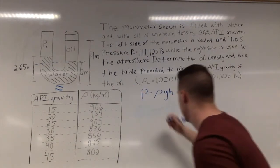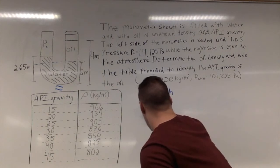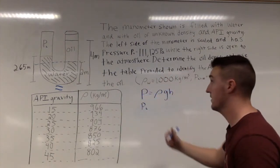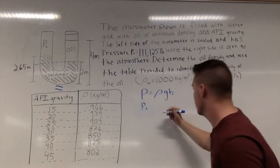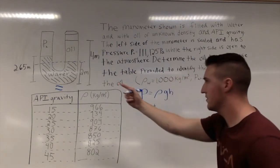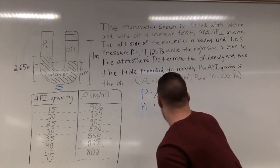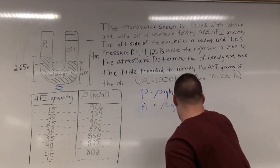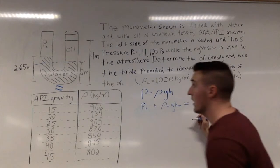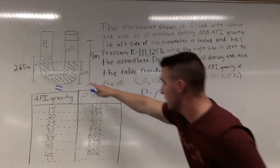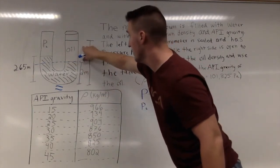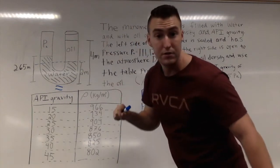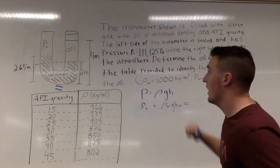We have the pressure on the left-hand side, which we're given, plus the hydrostatic pressure of water. We're ignoring everything below that. Jumping to this side, we have the oil and the pressure due to atmospheric pressure.